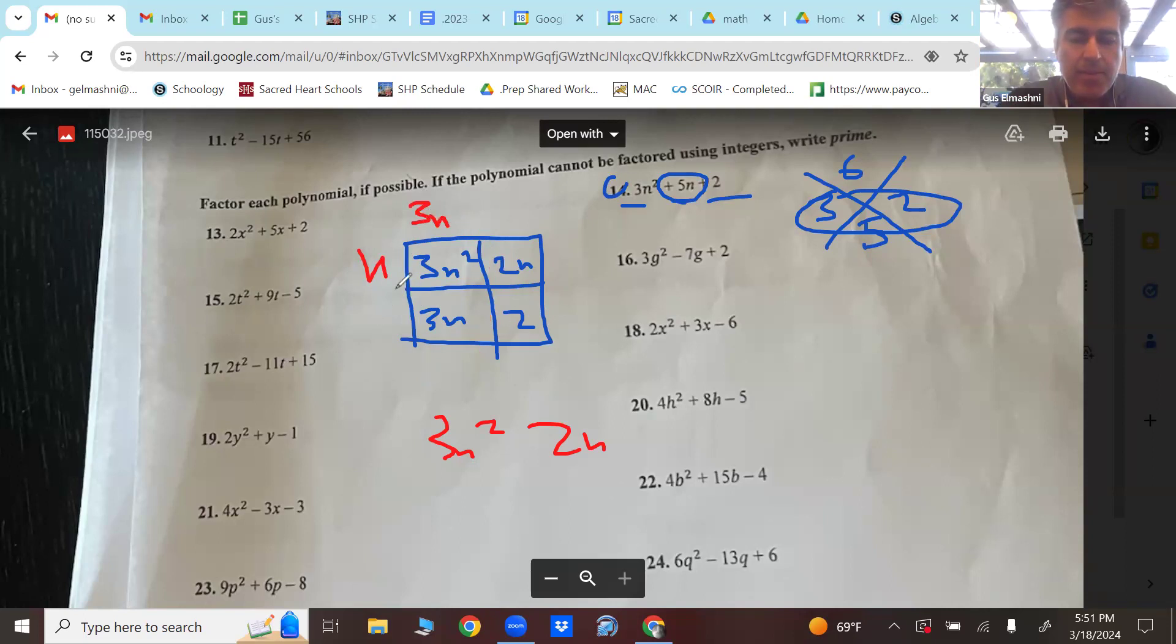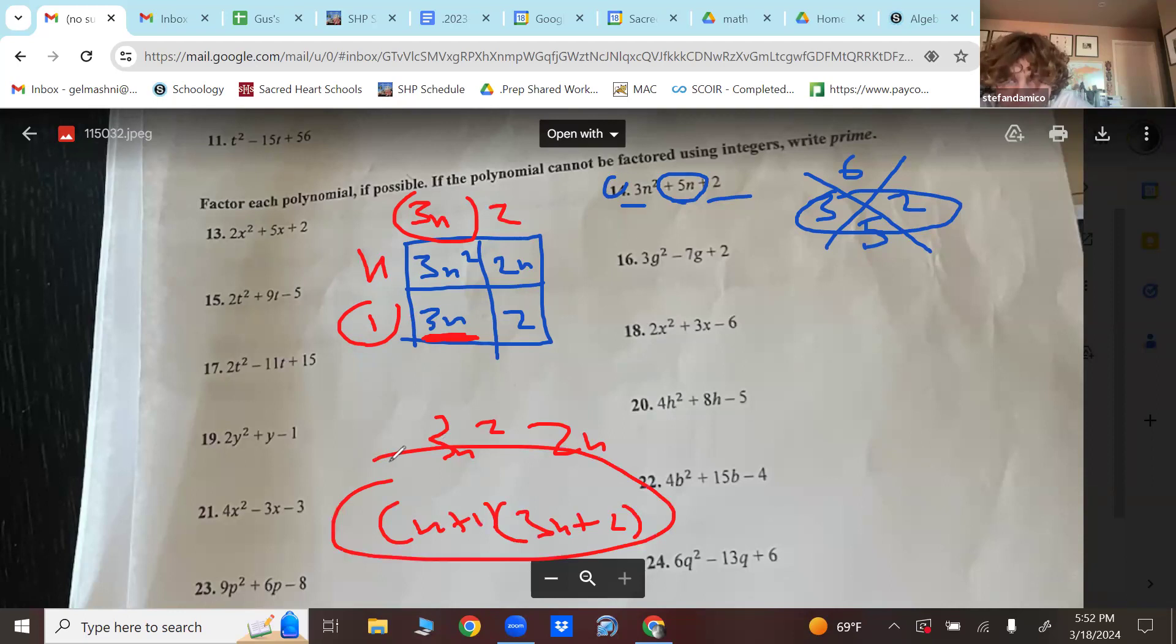Now, what do you multiply three N to get to three N squared? One. What do you multiply one to get to two? Two. There you go. You need incredible focus for this, just so you know. It requires incredible focus. But if you focus incredibly, you're going to get all these right all the time. You'll never miss them. Let's try this again.